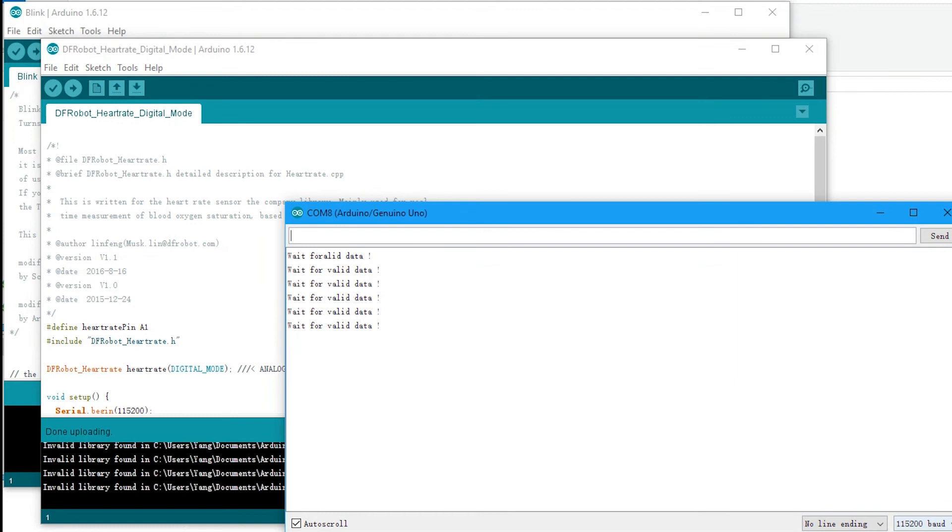Now the heart rate is being updated in real time. Upon a beat pulse is detected, and real-time heart rate will be displayed as a number in the serial monitor.